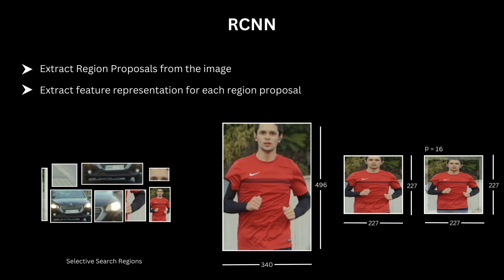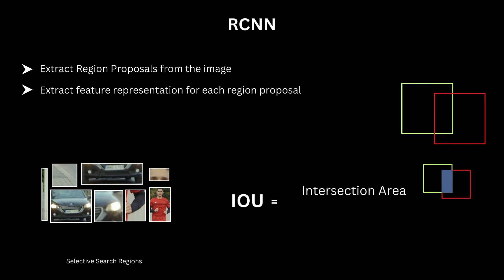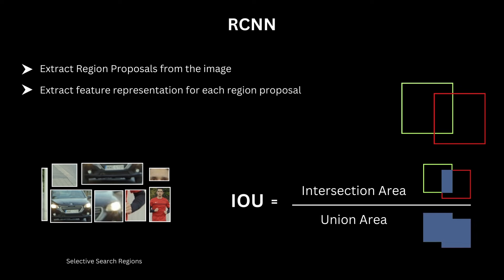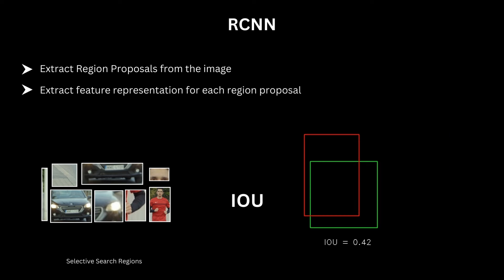For the labeling problem, we use a metric called IOU — Intersection over Union — a common metric used in object detection. Given two boxes, IOU is measured by the area of intersection divided by the area of union of the two boxes. The range of IOU is from 0 when there is no overlap, to 1 when two boxes exactly overlap.